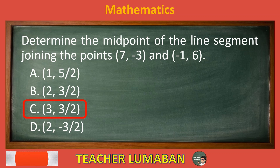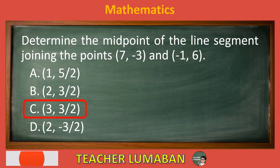The midpoint of the line segment joining the points (7, -3) and (-1, 6) is (3, 3/2).